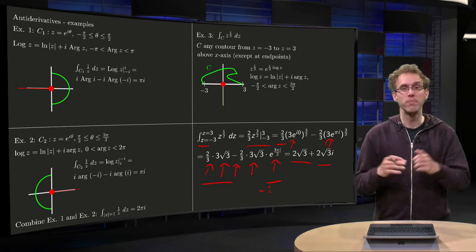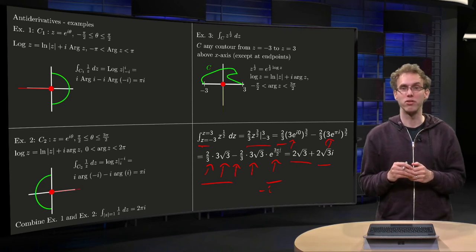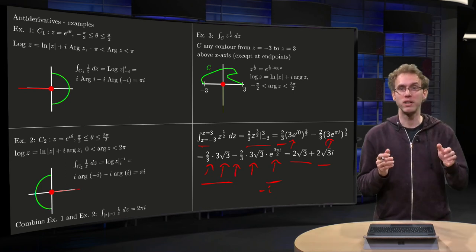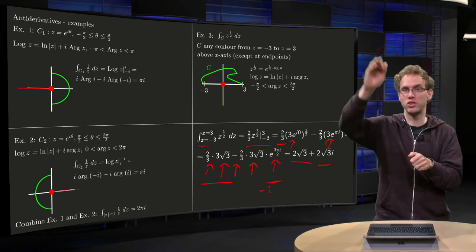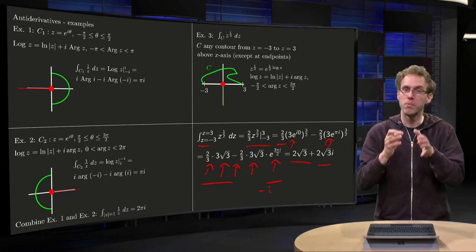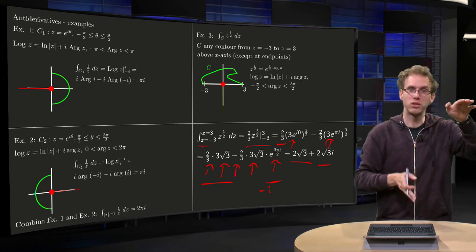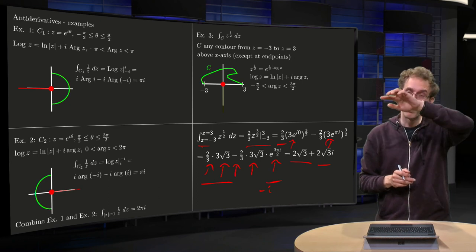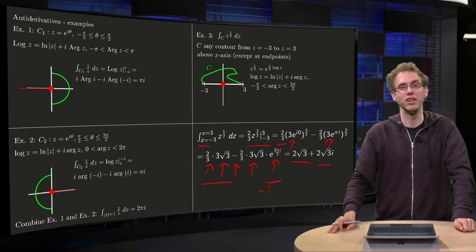You can use antiderivatives even if branch cuts are involved. If branch cuts are involved, you just have to be careful to place the branch cut such that it doesn't intersect your contour — make sure the contour is somewhere and the branch cut is somewhere else, so that you avoid crossing your branch cut with your contour, as in the examples in these videos.